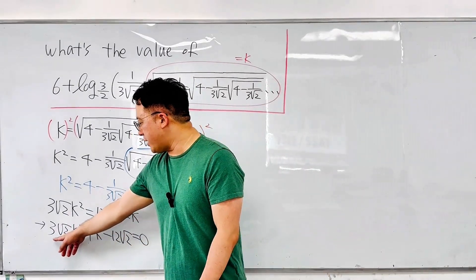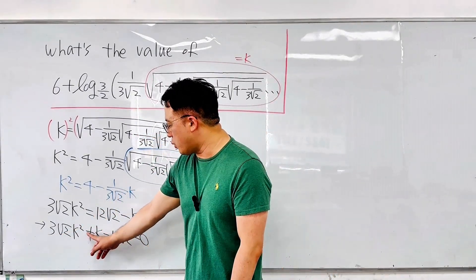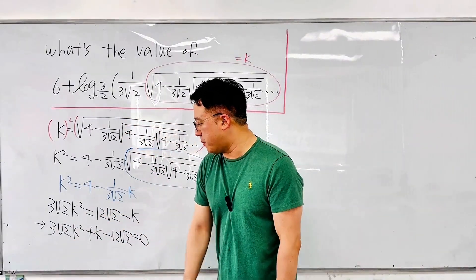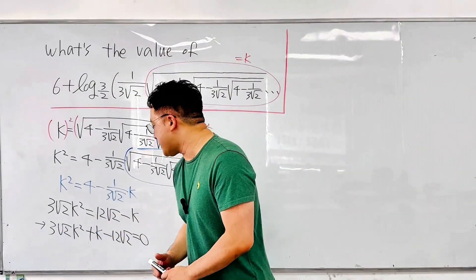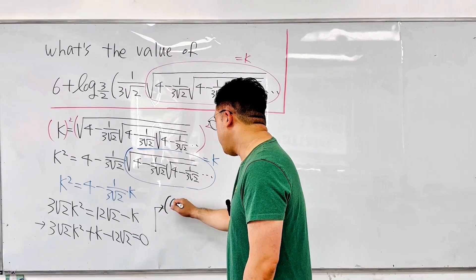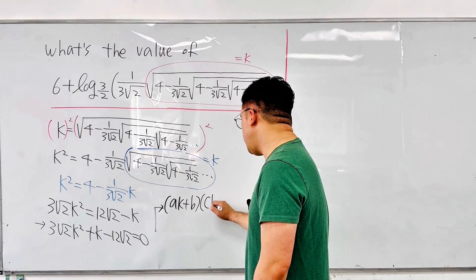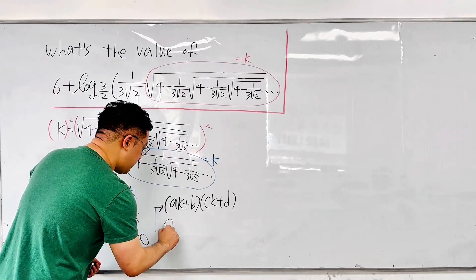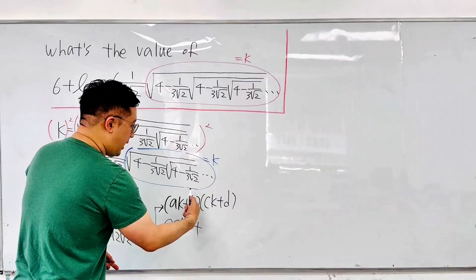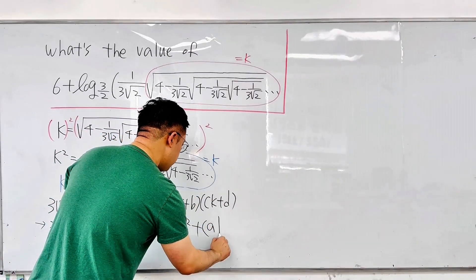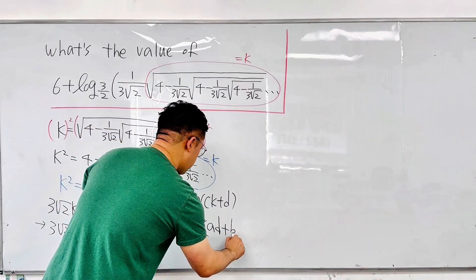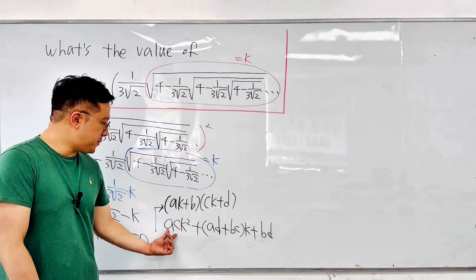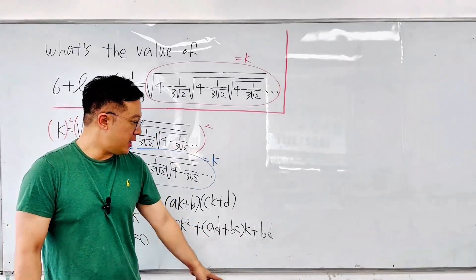Let me factor this quadratic. The leading coefficient is 3√2, the coefficient of K is 1, and the constant term is −12√2. Both the leading coefficient and the constant term contain √2. So I'll try factoring in the form (AK + B)(CK + D), which expands to AC·K² + (AD + BC)·K + BD.